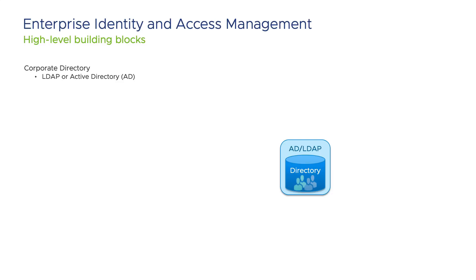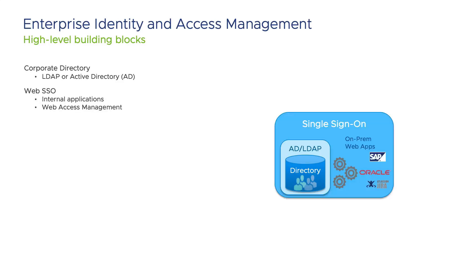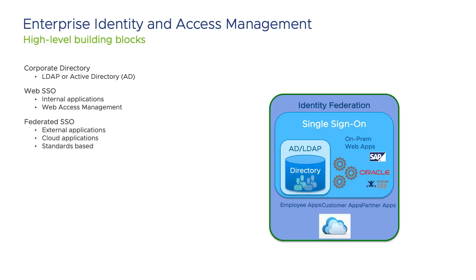Let's have a closer look at the components that build a typical enterprise identity and access management solution. First, we need a user store. This is often based on Active Directory but doesn't have to be. Secondly, quite early on companies invested in some single sign-on or SSO capabilities. These were often focusing on internal applications and used non-standard methods of achieving single sign-on. But once the company started to interact more with external parties such as partners and SaaS applications, federation was needed. These solutions are very much built on standards, and you can integrate products from many different vendors because of that.